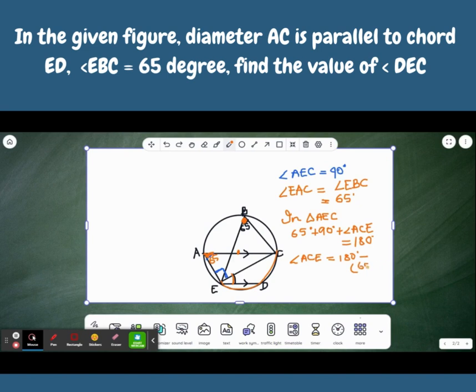which is 180 minus 155, that is 25. So, angle ACE, this angle is 25.